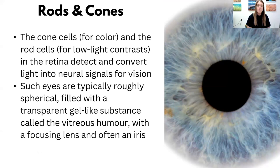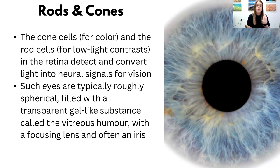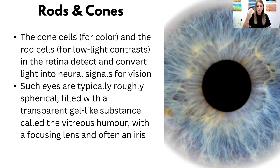Rods and cones also developed. Cone cells are for color; rod cells are for letting in low light. In the retina, they detect and convert light into neural signals for vision. Visual signals are then transmitted to the brain via the optic nerve. These eyes are typically spherical in shape, transparent, and have a vitreous humor that helps focus the lens. There's often an iris in these more complex eyes. The relaxing and tightening of muscles around the iris changes the size of the pupil — lots of light means small pupils; really dark means they open up to let more light in, helping the animal hunt at night or find food or shelter.